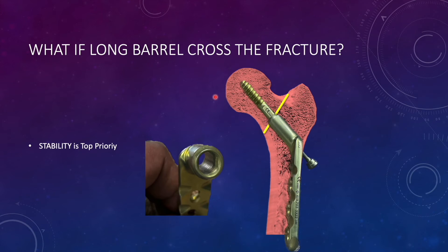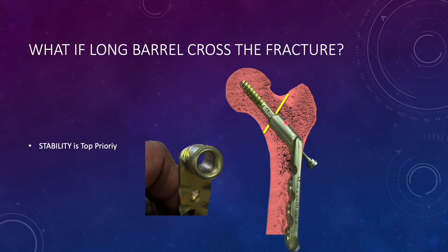Another concern among residents is whether to cross the fracture with the barrel part or not. Even if the screw length is more than 85 millimeter, residents avoid using the long barrel when the barrel crosses the fracture, thinking it will compromise fracture compression — but this is not so. Stability is of paramount importance in proximal femur fractures, so whenever possible, use the long barrel. Use the short barrel only when there is limited space for compression and collapse due to screw length, but if good compression length is available, go for the long barrel irrespective of whether the barrel crosses the fracture site.